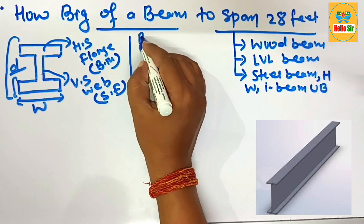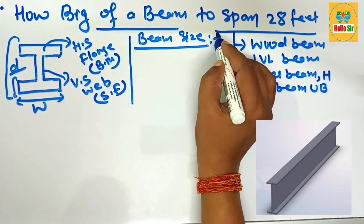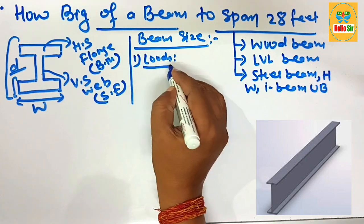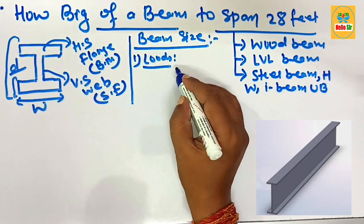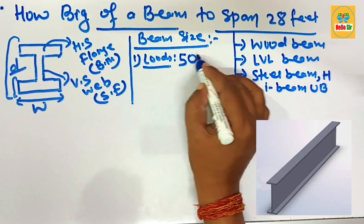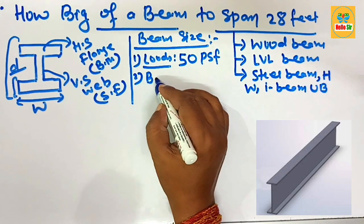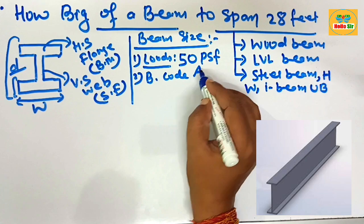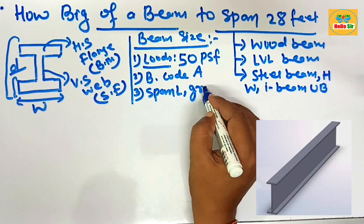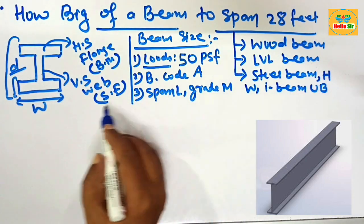The beam size depends on several major factors. The factors that decide the accurate beam size are: the load acting on it — that is the imposed load and the dead load of the structure. For residential purposes, that should be about 50 pounds per square foot. The second factor is the building code in your area. The third factor is the span length of the beam and the grade of material from which the beam is made.